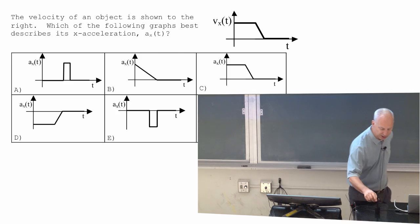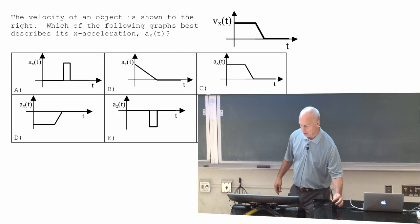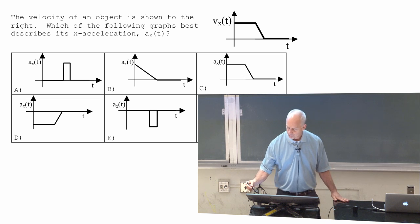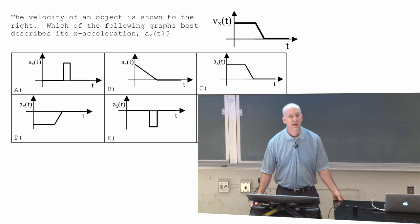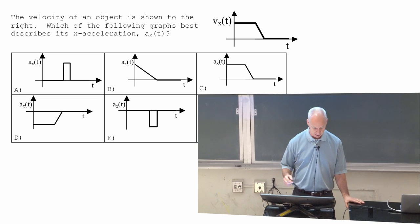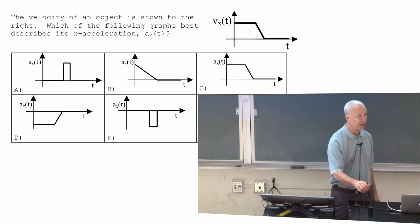A little more practice with ideas of calculus. Here's the x of t you just found. Now, tell me what an acceleration graph might look like. Acceleration is a derivative of a velocity graph.